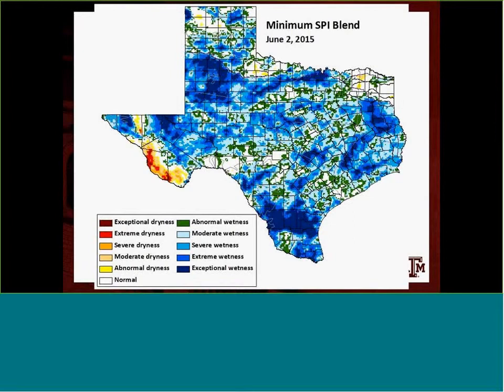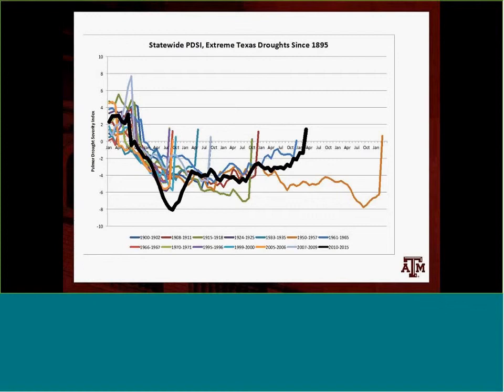Seeing the evolution of the drought, the product we looked at has the same arc as the statewide PDSI — very rapid degradation and then gradual stop-start improvement.